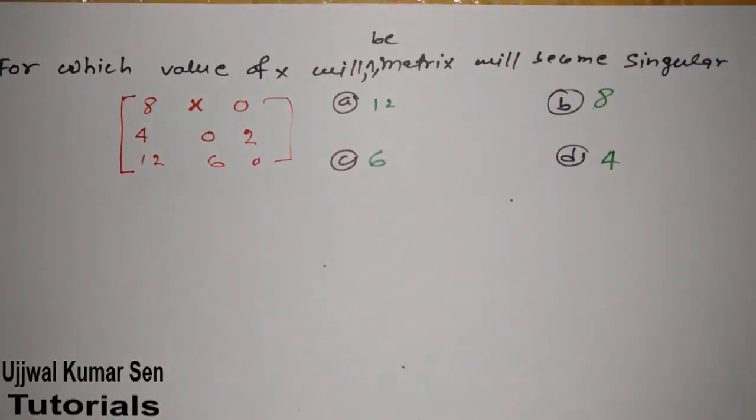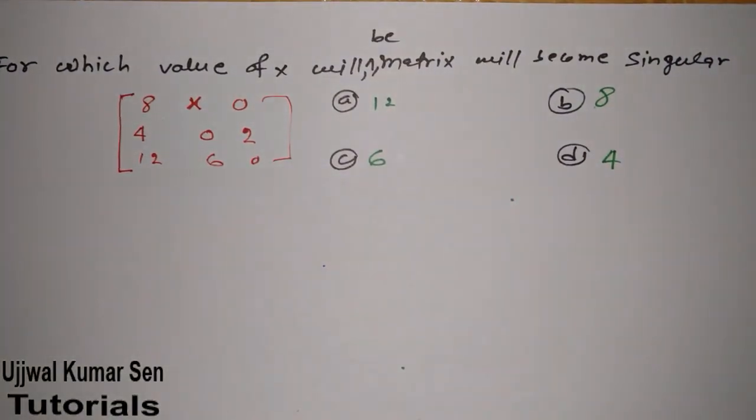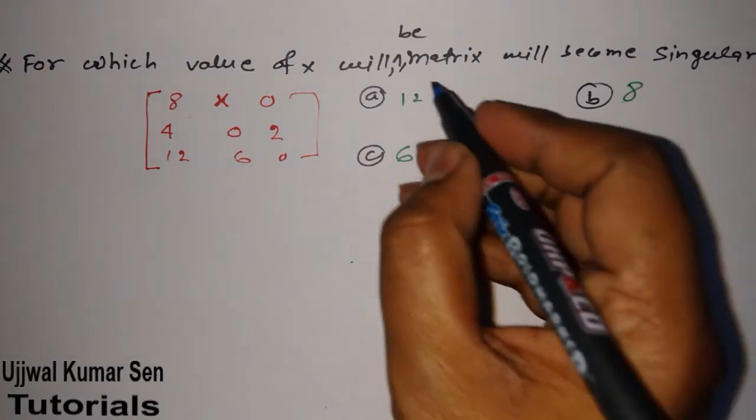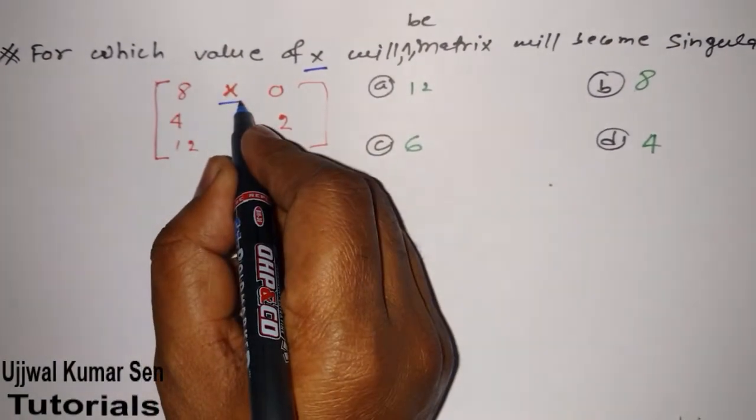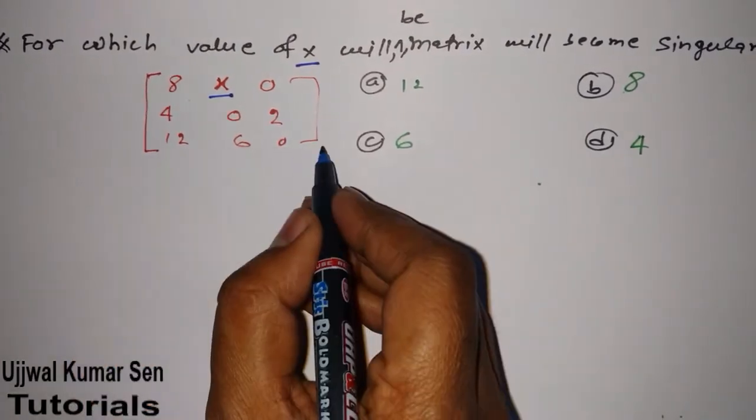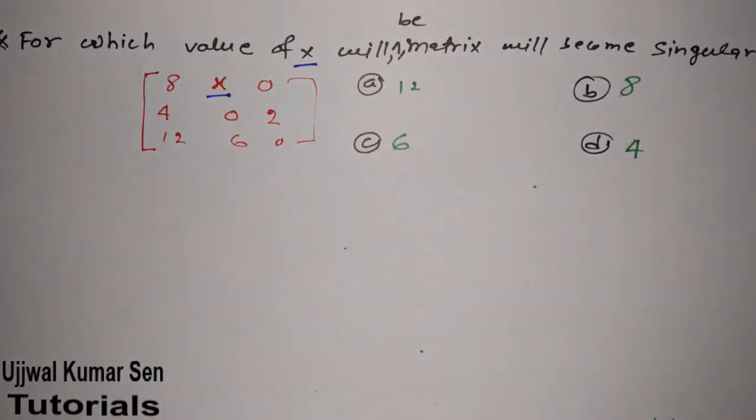This is Ujjwal Kumar Sen and in this video I am going to share with you one of the questions which has been asked in GATE previous year paper. In this question, what they have asked is what is the value of x here out of these four options for which this matrix will become singular.